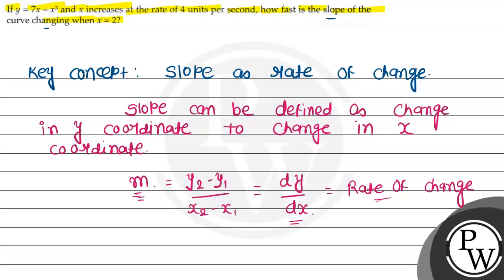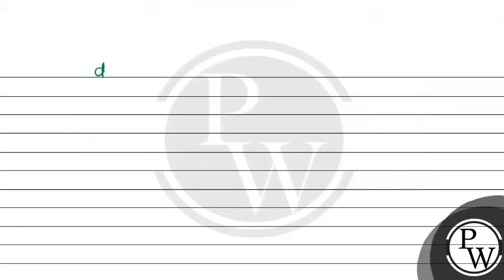But, we need its rate of change. Slope's change in time. Here another quantity is given, that is rate, x increasing at a rate of 4 units per second. Means, x's change with respect to time. So, dx upon dt, that is 4 units per second, that is given.